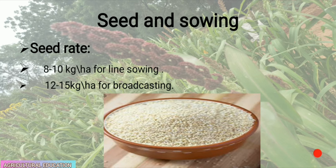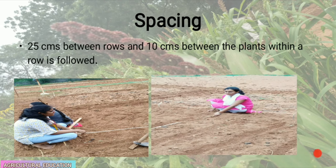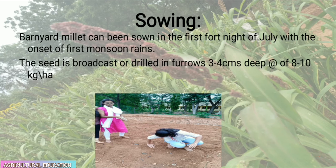The seed rate for barnyard millet is 8 to 10 kg per hectare for line sowing and 12 to 15 kg per hectare for broadcasting. The spacing adopted is 25 cm between rows and 10 cm between plants. Barnyard millet is sown in the first fortnight of July with the onset of monsoon rains. The seed is broadcasted or drilled in furrows 3 to 4 cm deep at a rate of 8 to 10 kg per hectare.